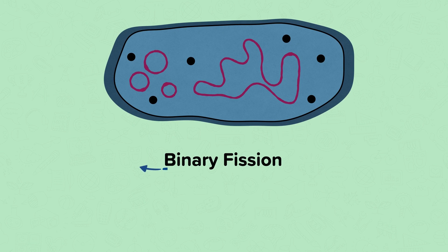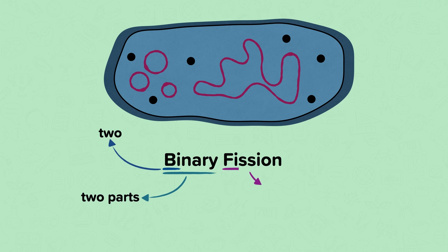Bi means two, and binary means having two parts. Fission means to divide or to split. So binary fission means to split into two parts.